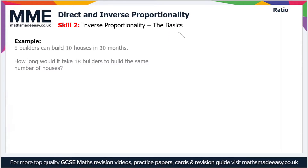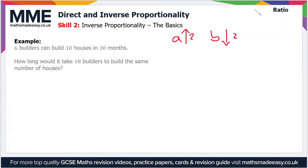Moving on, what about inverse proportionality? If you have two quantities which are inversely proportional to each other — let's say a and b again — then as a increases, b decreases at the same rate. So if you double a, you scale down b by a factor of two; in other words, you halve the value of b.